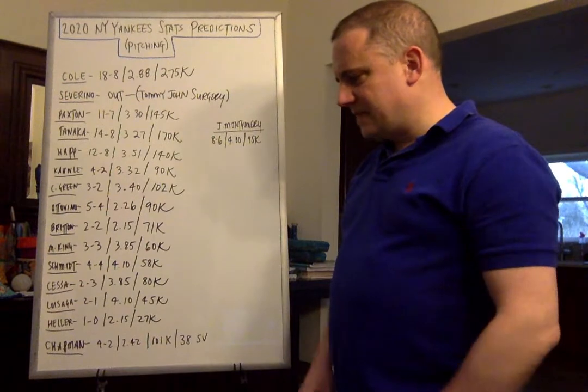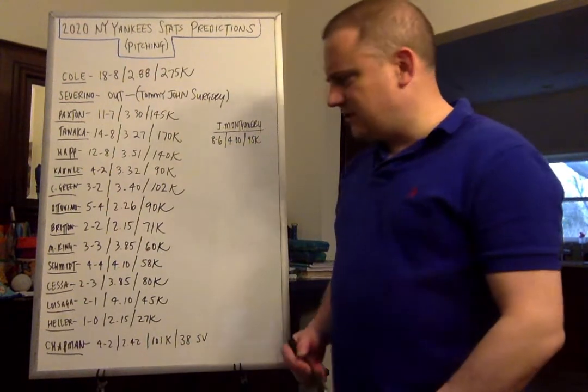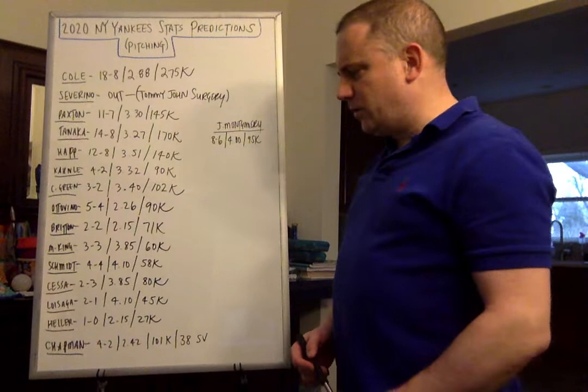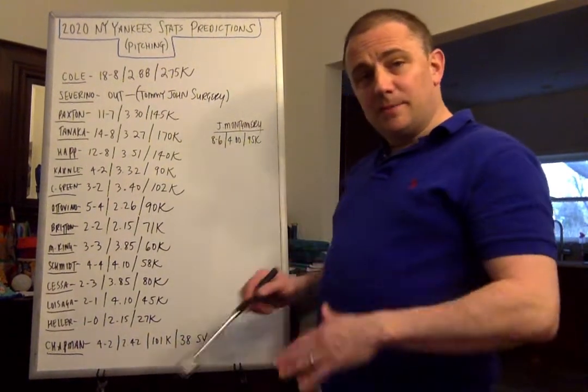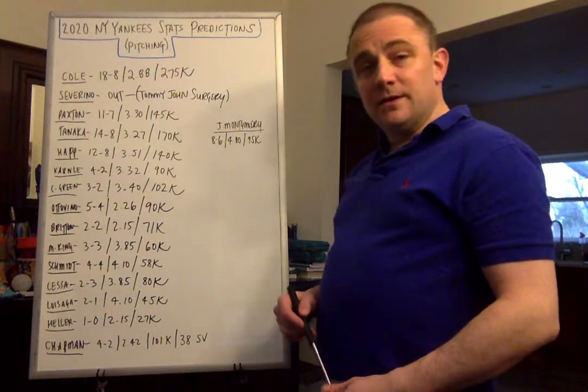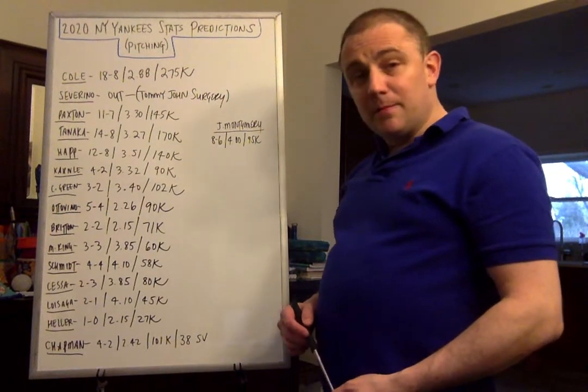Ben Heller, another talented pitcher, coming back from injury as well. He'll get some opportunities. He'll be about 1-0 at a 2.15 ERA and about 27 strikeouts. A lot of these guys will add up. They'll have spots to come in here and there, and they're young, and they'll get plenty of opportunities.